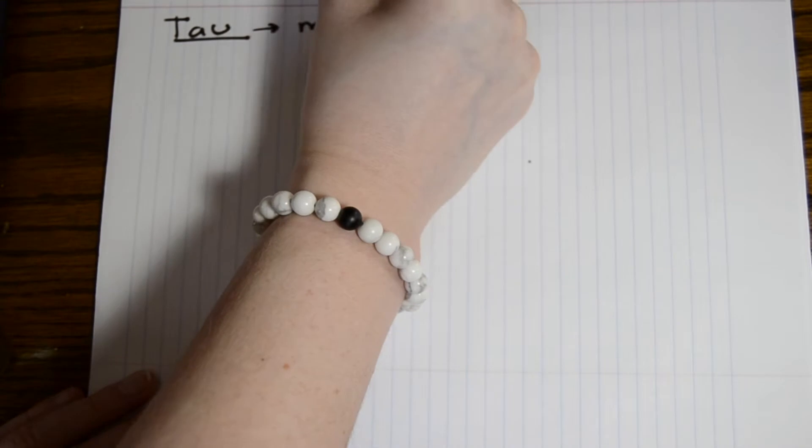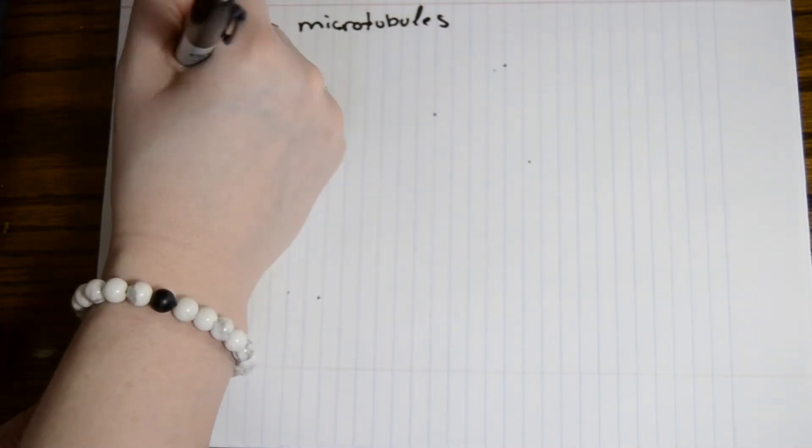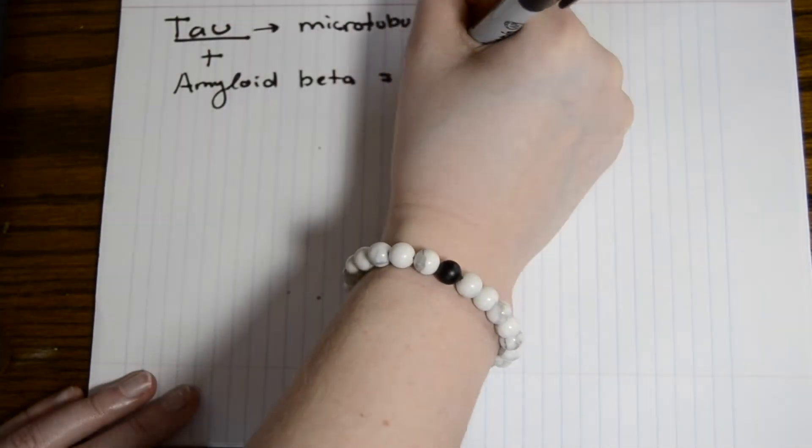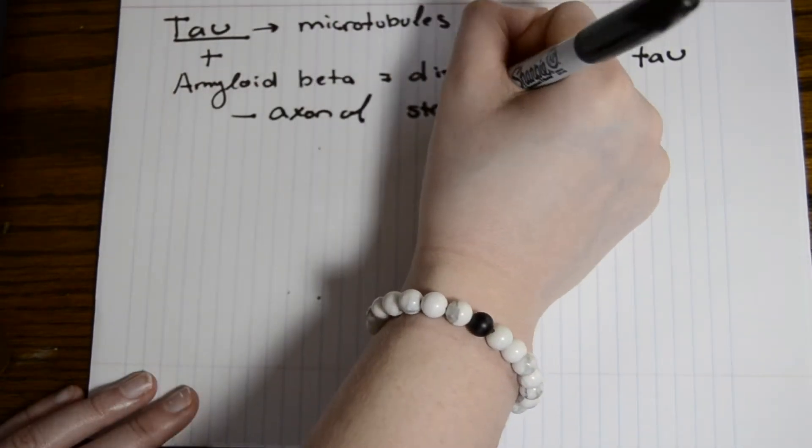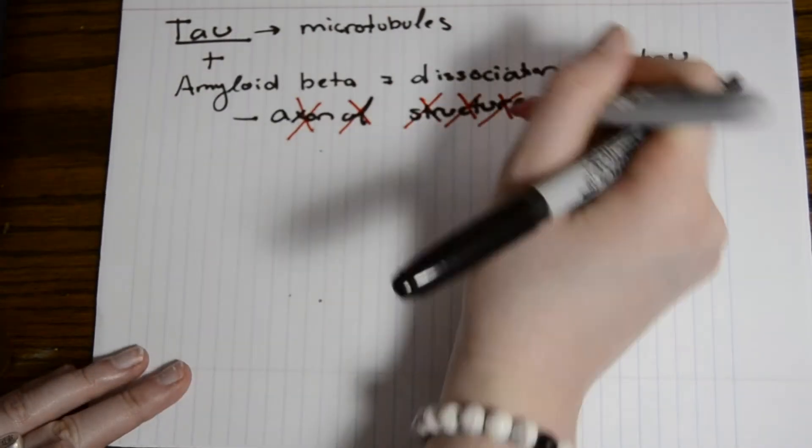Tau is a protein that stabilizes microtubules. When amyloid beta peptide is introduced, the dissociation of tau occurs and the axonal structure decreases.